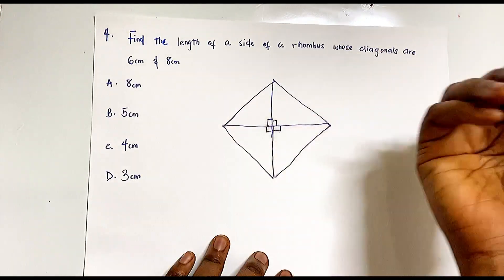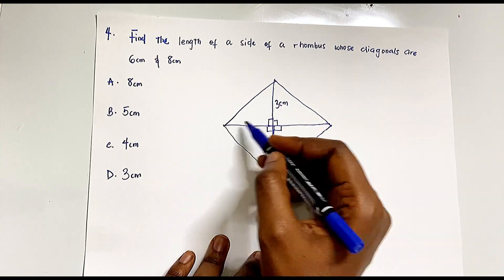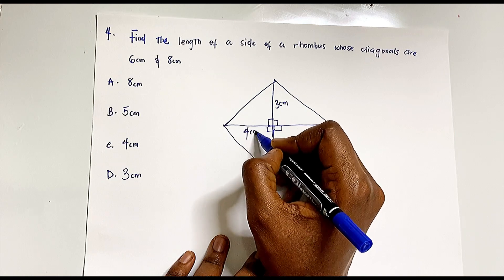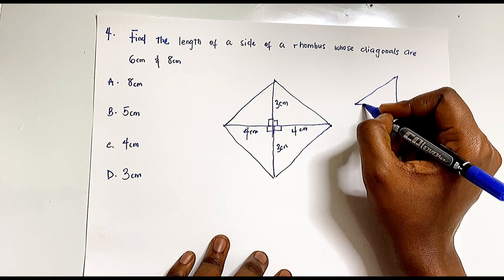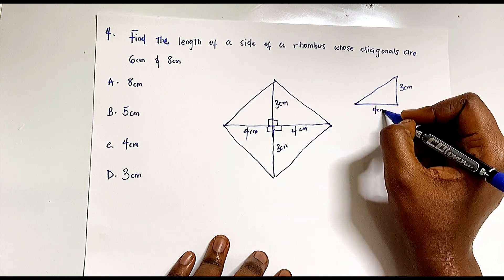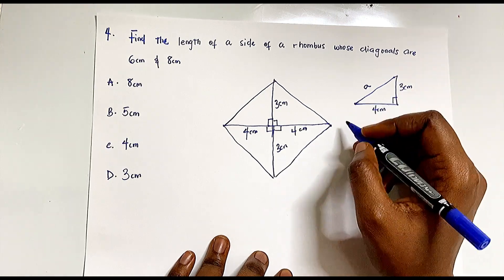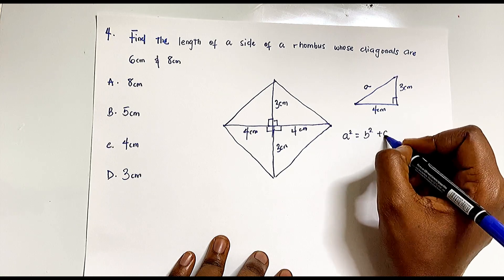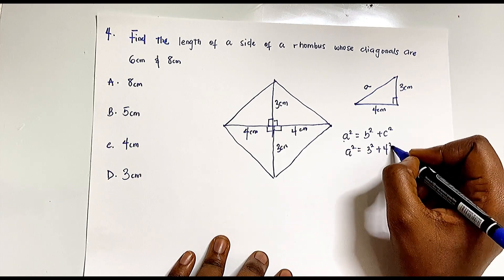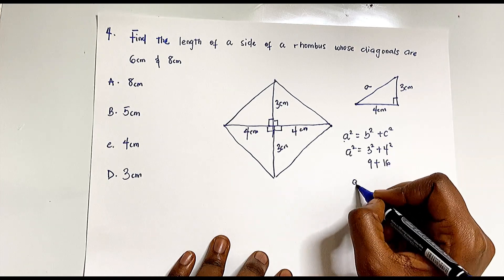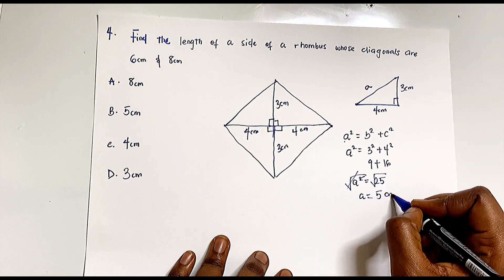With diagonals of 6 cm and 8 cm, the halves are 3 cm and 4 cm respectively. Using Pythagoras: a² = 3² + 4² = 9 + 16 = 25. Taking the square root, a = 5 centimeters, which is option B.